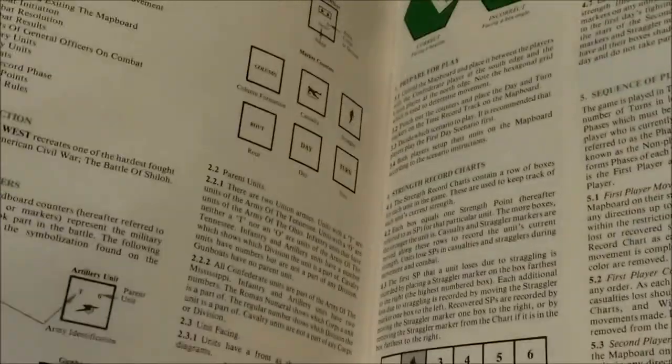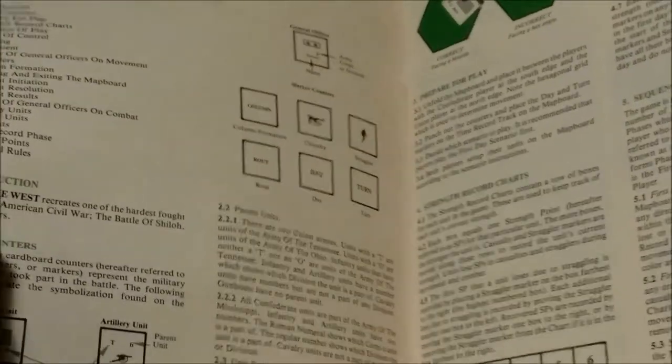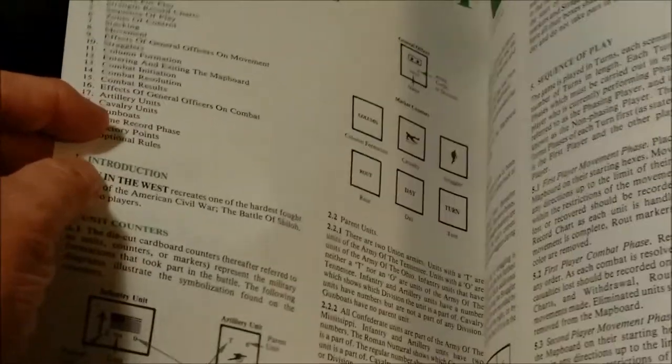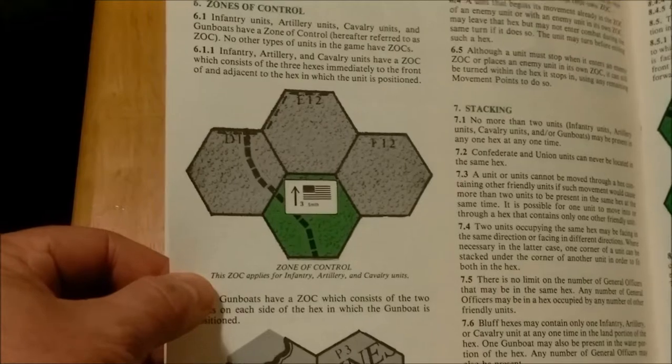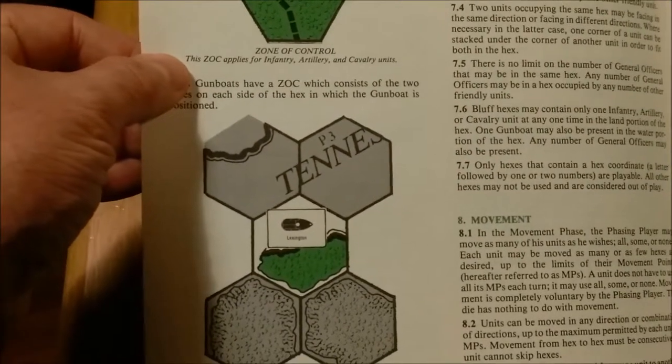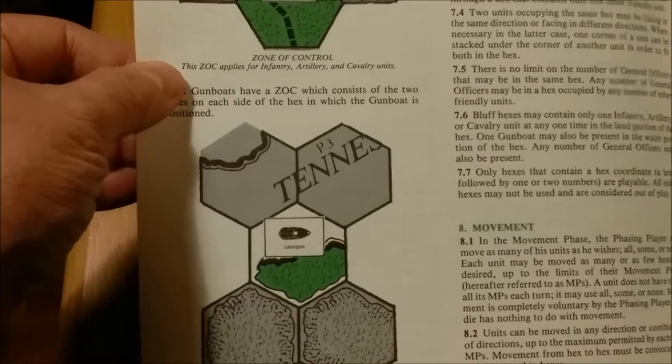Stragglers can be recovered if they spend a turn not moving out of an enemy zone of control. We have some examples of play such as zones of control and the river boats, the gun boats, their zones of control.